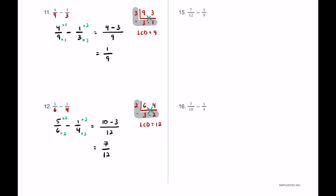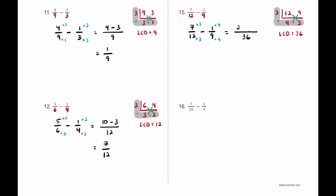For number fifteen we have seven-twelfths minus one-ninth. Twelve and nine have three in common: three goes into twelve four times, three goes into nine three times. Three times four is twelve, twelve times three is thirty-six — so the LCD is thirty-six. Seven-twelfths times three over three, one-ninth times four over four: seven times three is twenty-one, one times four is four, so twenty-one minus four equals seventeen — giving seventeen over thirty-six.